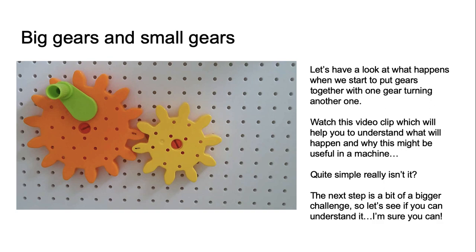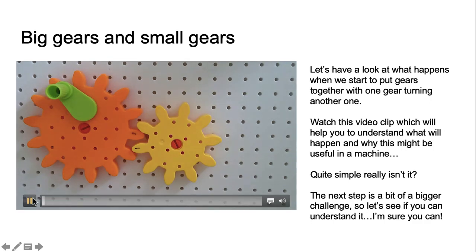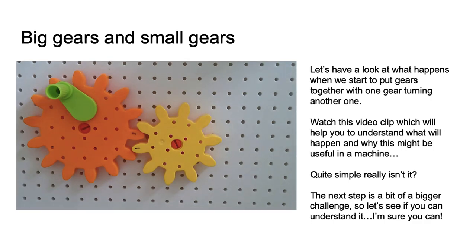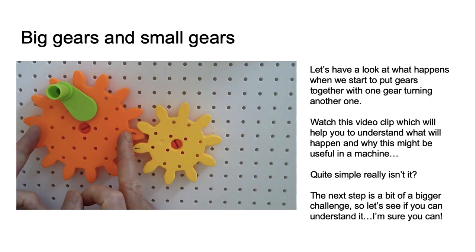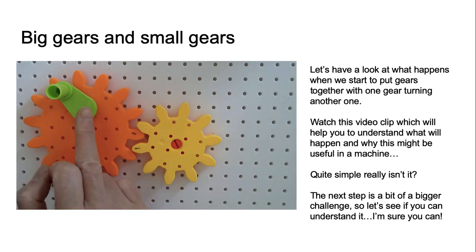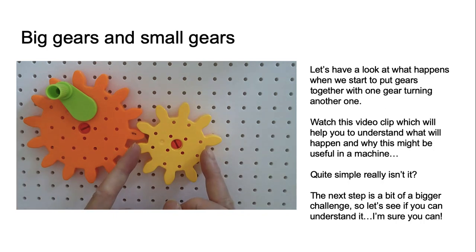Big gears and small gears. Let's have a look at what happens when we start to put gears together with one gear turning another one. Watch this video clip which will help you understand what will happen and why this might be useful in a machine. Here we have some very nice gears — a big orange one and a smaller yellow one. The bigger one not only has a bigger diameter, that's the distance across the middle of the circle, but it has more teeth around the edge. The smaller one has a smaller diameter and fewer teeth.